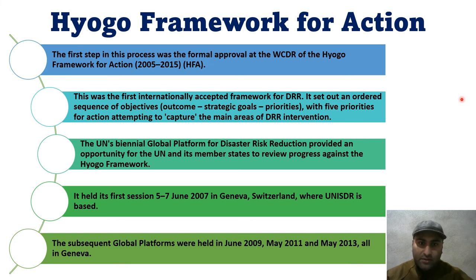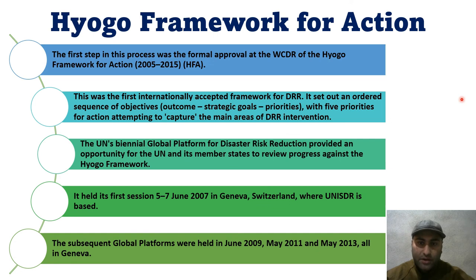The Hyogo Framework was first set up from 2005 to 2015. It was the first internationally accepted framework for DRR, providing an ordered sequence of objectives including outcomes, strategies, goals, and five priority areas capturing the main areas of intervention. The first session was held from 5–7 June in Geneva, Switzerland, with subsequent global platforms in 2009, 2011, and 2013.